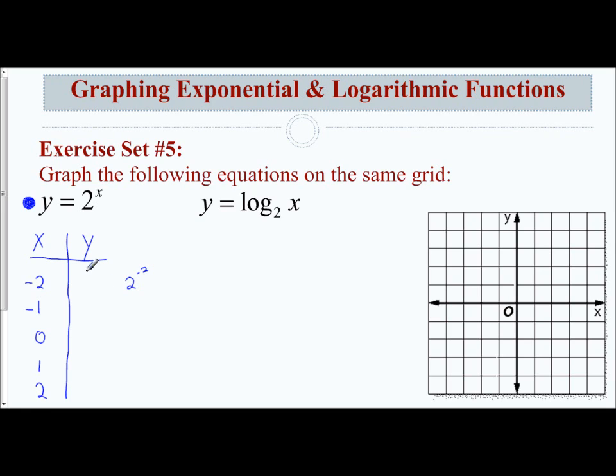2 to the negative second means 1 over 2 squared, so that's 1 fourth. 2 to the negative first means 1 over 2 to the first, which is 1 half. 2 to the 0 - anything to the 0 is 1. 2 to the first is 2, and 2 squared is 4.